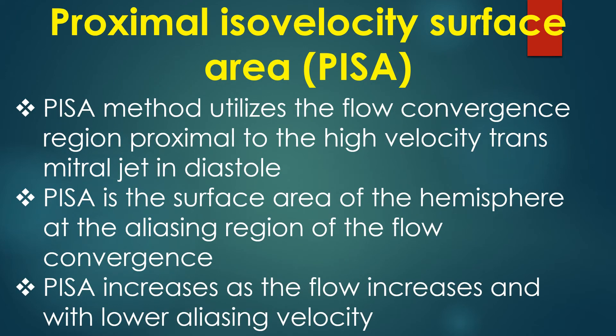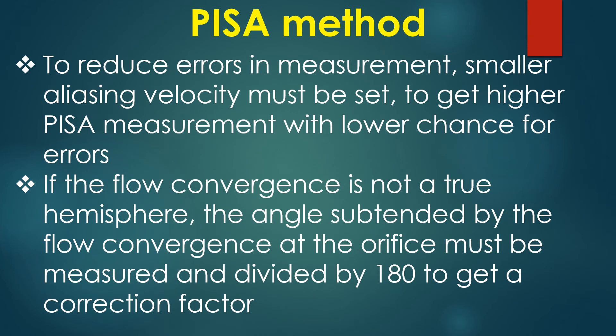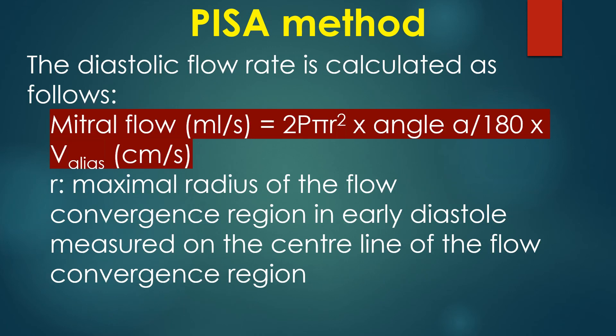The proximal isovelocity surface area, or PISA, method utilizes the flow convergence region proximal to the high-velocity transmitral jet in diastole. PISA is the surface area of the hemisphere at the aliasing region of the flow convergence. PISA increases as flow increases and with lower aliasing velocity. To reduce errors in measurement, a smaller aliasing velocity must be set to get a higher PISA measurement with a lower chance for errors. If the flow convergence is not a true hemisphere, the angle subtended by the flow convergence at the orifice must be measured and divided by 180 to get a correction factor.